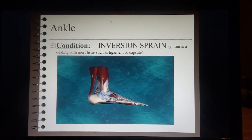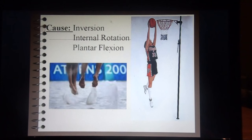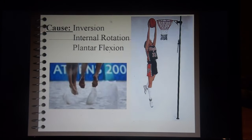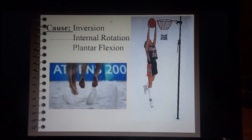With an inversion ankle sprain, we're dealing with inert tissue — ligament, capsule, those types of things. The cause is inversion, internal rotation, and plantar flexion. Think of somebody going up for a basketball shot or jumping in volleyball — when they come down, they take a force through their foot, sometimes landing on somebody else's foot, causing that quick turn of inversion, internal rotation, while in a plantar flexion position.